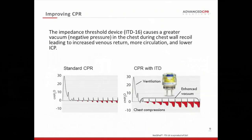We'll start with the impedance threshold device, also known as the ITD16 or the ResQPOD. This device is attached to the airway. Comparing intrathoracic pressure curves with standard CPR alone versus CPR with the impedance threshold device: on the left, without the device, you see a rise in intrathoracic pressure and then a tiny vacuum that develops as the chest recoils. On the right, a greater vacuum develops inside the thorax, which sucks more blood back into the heart and lowers intracranial pressure. This results in improved circulation — in fact, it doubles blood flow to the heart and the brain with just a pair of hands. But you have to do high-quality CPR: about 100 to 110 compressions per minute, 2 inches of chest compression, with full chest wall recoil.